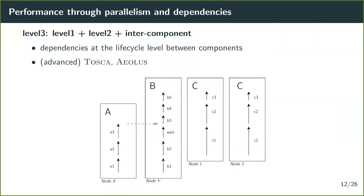The third level offers dependencies at the lifecycle level. Instead of saying B depends on A, you say that step B3 of B depends on step A3 of A. By specifying dependencies at this finer grain, you can run A1, B1, A2, B2, and A3 simultaneously before the synchronization point where the dependency between A3 and B3 is needed, further reducing the overall execution time.